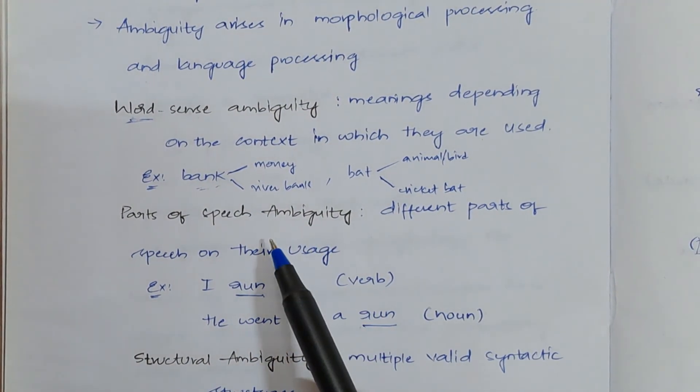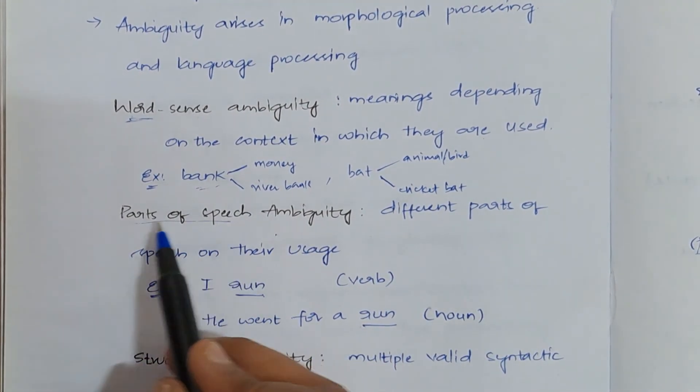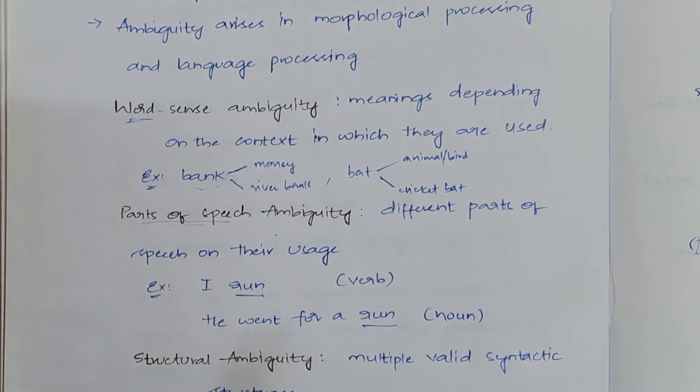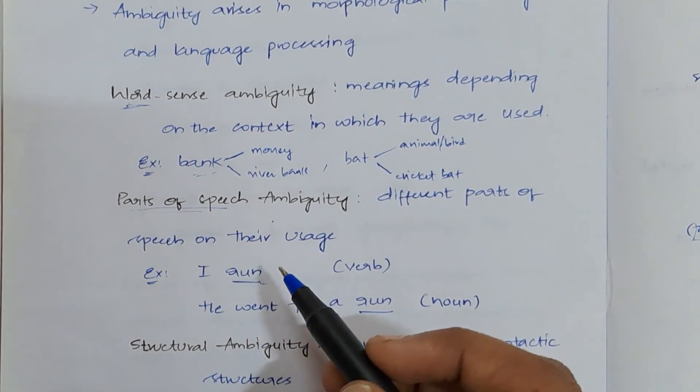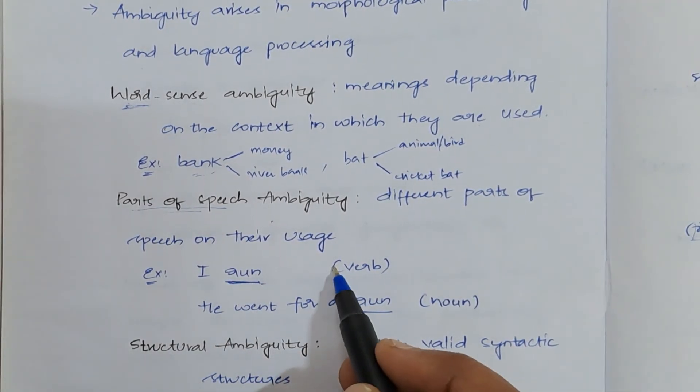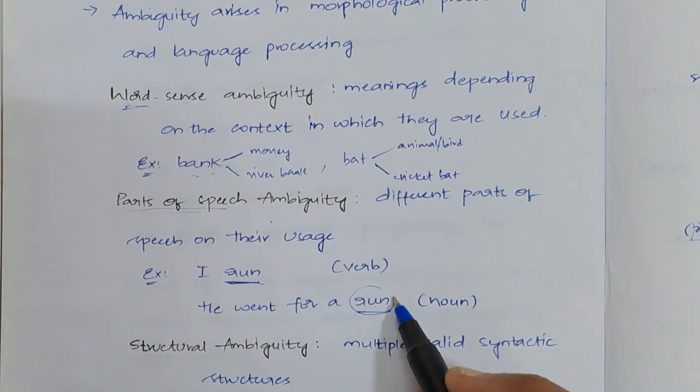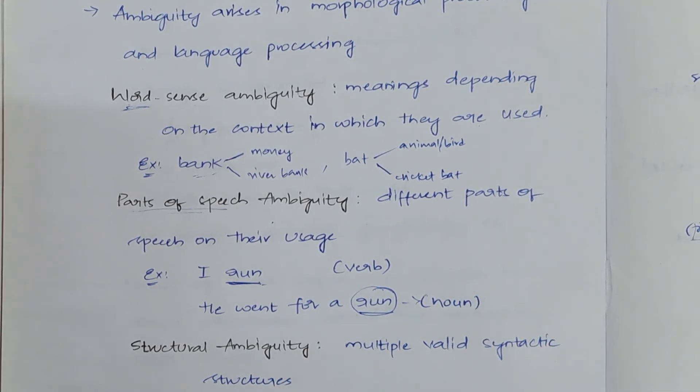And then we will be having parts of speech ambiguity. What is this parts of speech? For a particular word, the parts of speech of that particular word will be changing in different contexts. Take the example. In the first sentence, run is referred as verb, and in second sentence, the run is changed to noun. This is nothing but parts of speech ambiguity.